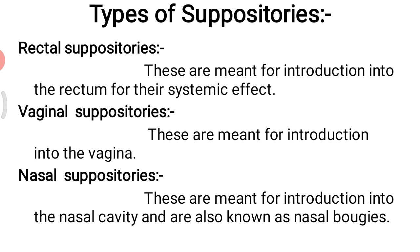Second, vaginal suppositories. These are made for introduction into the vagina. These suppositories are also known as pessaries and are larger than rectal suppositories. They may be conical, rod shape, or wedge shape and are usually available in weight four to eight grams. Vaginal suppositories are mainly used for their local action on the vagina. Nowadays vaginal tablets and vaginal capsules are also available as substitutes.